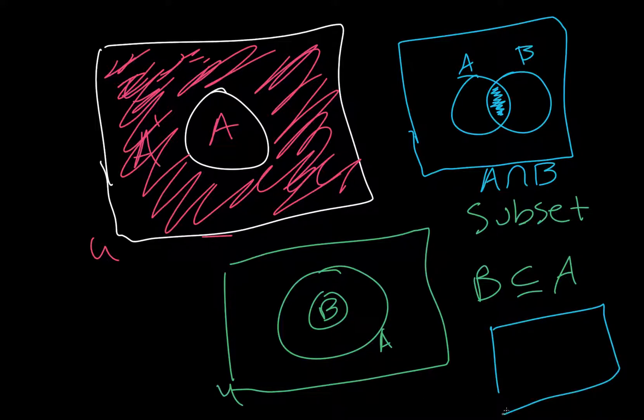If we have two intersecting sets, we can also talk about the union. So, we can have A union B. Once again, this is A, this is B, and their union would be everything in A, their intersection, and everything in B. I know that's kind of hard to see. In the book it looks a little more clear.